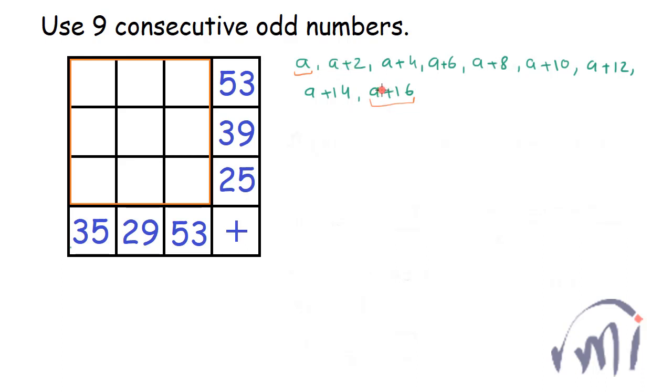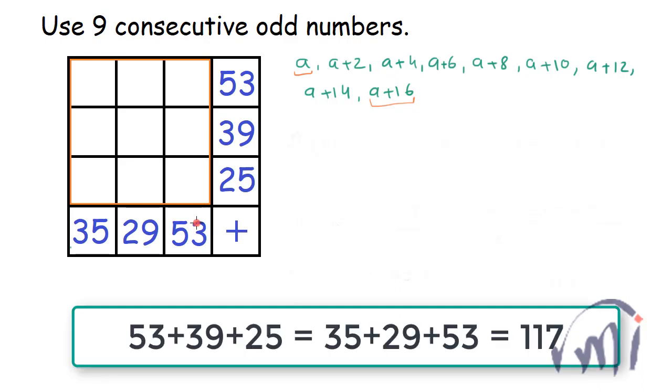If you notice, if you add the sum of all the columns or if you add the sum of all the rows, both of them will be equal and that will be actually the sum of all these nine consecutive odd numbers.